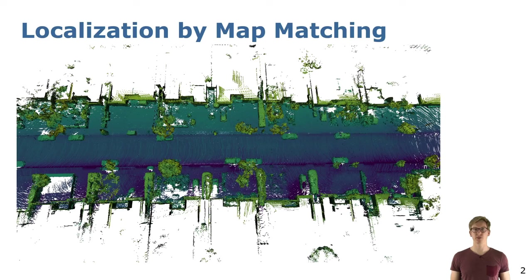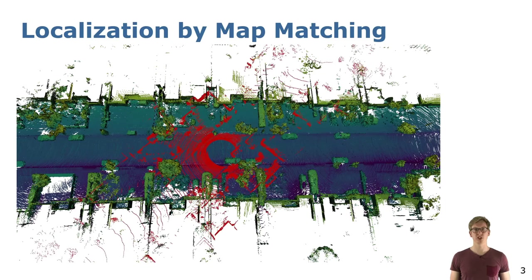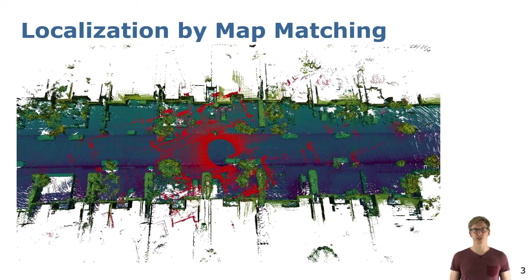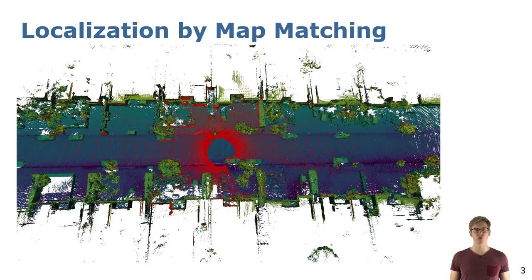Having a point cloud map like this can help us to localize our robots or autonomous vehicles. For this, we can compare the map with the current observations of a LiDAR that is mounted on top of the vehicle. The right position of the vehicle is where the observations are aligned to the map.